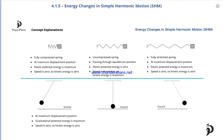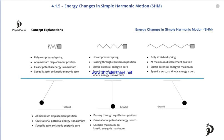Then, as gravitational potential energy converts into kinetic energy, the pendulum bob moves to the right, loses height and gains speed. At some point it reaches its lowest possible height above the ground and is passing through its equilibrium position. If we assume that at this position height is zero, then we can conclude that gravitational potential energy is zero. By now all gravitational potential energy has converted into kinetic energy, so speed is at a maximum and kinetic energy is maximum as well.